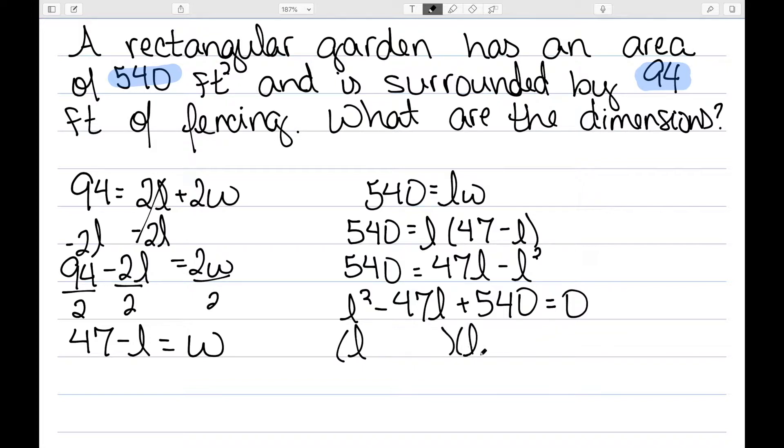We then need to factor. We need two numbers that multiply to be 540 and subtract to be 47. And that will be negative 27 and negative 20.